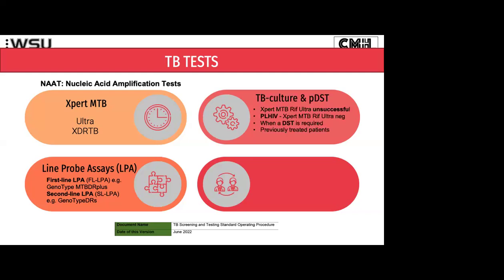We still have our TB culture and phenotypic DSTs. GeneXpert Ultra is basically almost as good as a culture, so there are fewer scenarios where you're going to wait for a culture to give you clarification. The GeneXpert is going to sort you out most of the time. Cultures become useful if GeneXperts are unsuccessful or unavailable. In people living with HIV, if the GeneXpert is negative, it's still useful to get a culture if you're suspecting TB. Any patient where you're concerned about possible drug resistance - someone exposed or previously treated - it's also useful to have a TB culture in the background.